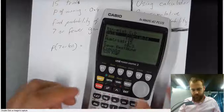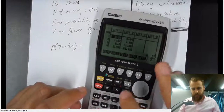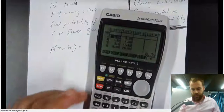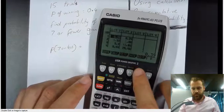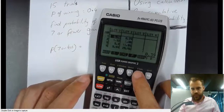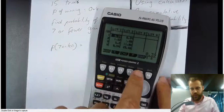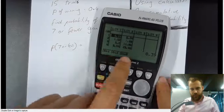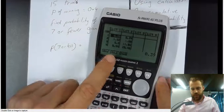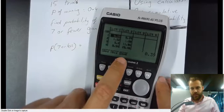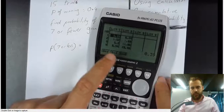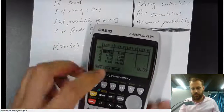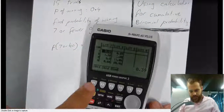I'll get my calculator out. Let's go back to our stat menu, and we're going back to our distribution. This time we're pressing binomial again, and we've got three options: Binomial PD, Binomial CD, and inverse binomial. We're going to go with the second one, which is a cumulative distribution — C for cumulative. BCD.